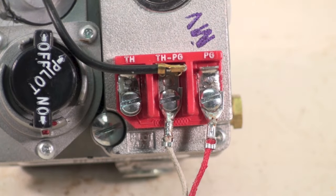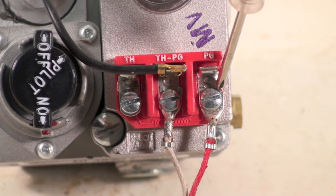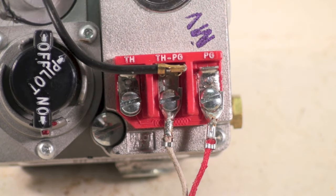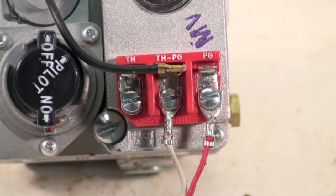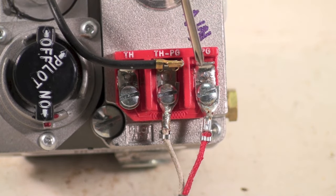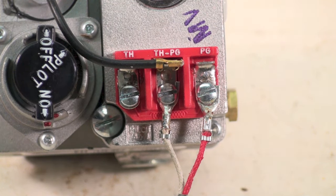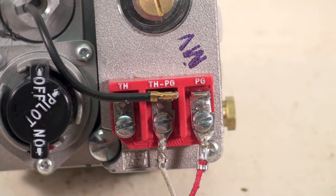You can see where we have PG here and we have PG or TH-PG. PG is pilot generator. We know we have a PG, which is a pilot generator. You can call it what you will, it's a thermal pile. That's the silly thing right there. That's the thermal pile. White-Rogers calls it a pilot generator.